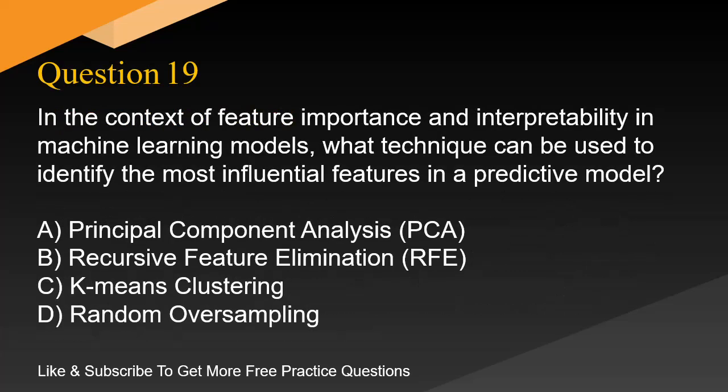Question 19. In the context of feature importance and interpretability in machine learning models, what technique can be used to identify the most influential features in a predictive model? A. Principal Component Analysis, PCA. B. Recursive Feature Elimination, RFE. C. K-means clustering. D. Random oversampling.